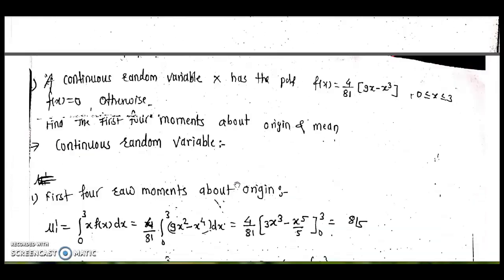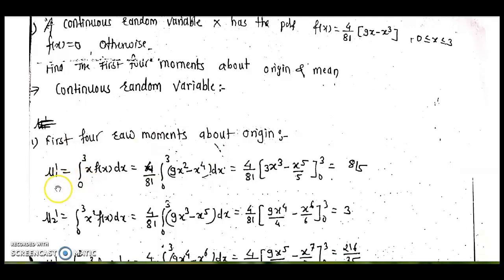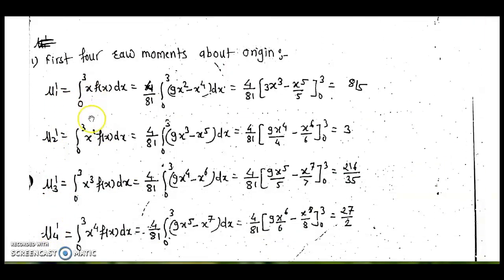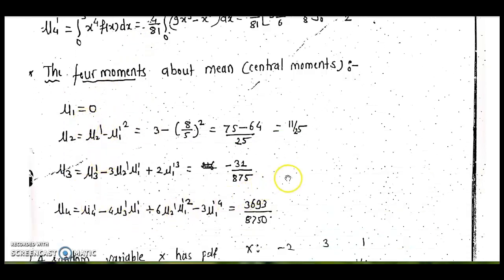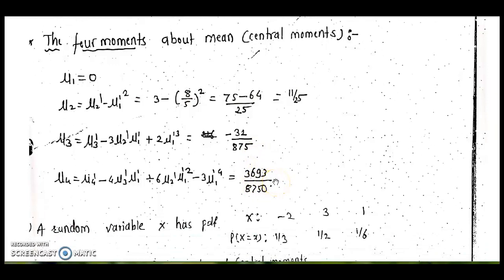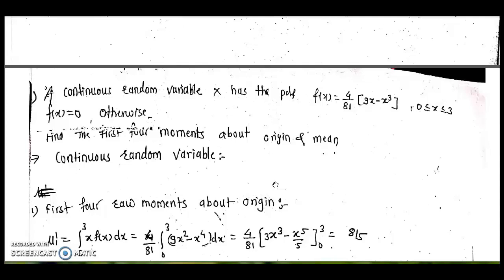The first example is a continuous random variable x with PDF f(x) defined on the range 0 to 3 and 0 otherwise. We find the first four raw moments about the origin using integration: mu_1', mu_2', mu_3', mu_4', giving values 8/5, 3/2, 16/35, and 27/2. Using these, the central moments are obtained as 0, 11/25, −32/875, and 3693/8750. Note this example and try to solve it separately to match the answers.